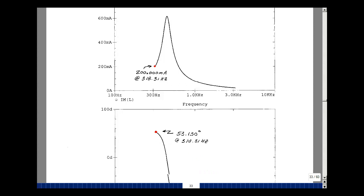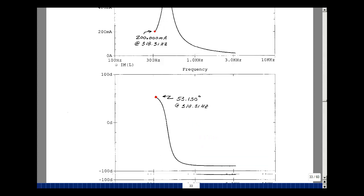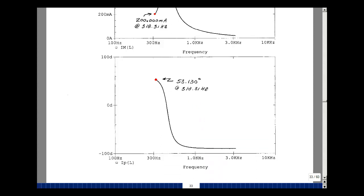And then ask for the phase by just putting a p instead of an m. I use lowercase, but either case is okay. And you get 53.13 degrees, and that's exactly what we hand calculated.